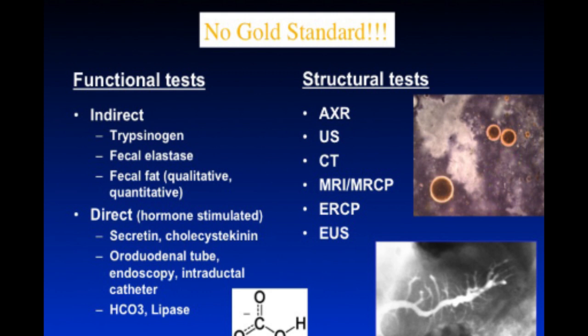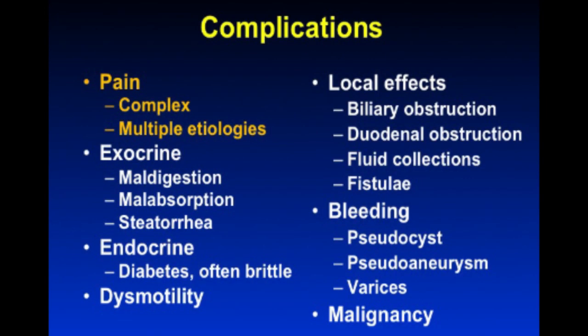Some of the complications include pain, which is probably the most debilitating and what most patients will come to see you for. It's complex — not just inflammation of the pancreas, but a complex interplay between the CNS and viscera. There are also exocrine and endocrine issues, motility problems that can mimic gastroparesis, local effects including biliary obstruction, unique and potentially lethal bleeding complications, and malignancy, which should always be kept in the back of our minds.